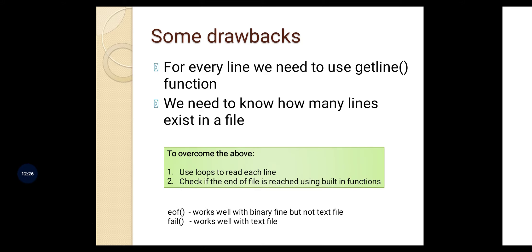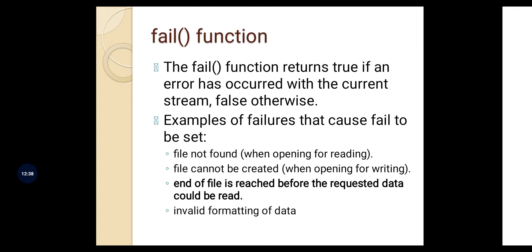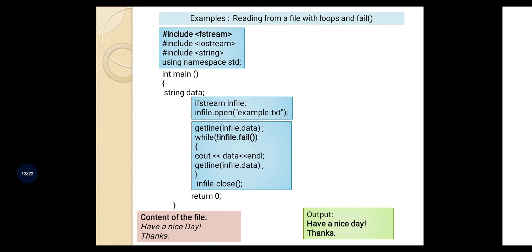The fail() function returns true if an error has occurred with the current stream, otherwise it returns false. Examples of errors include: the file not being found, the file not being able to be created due to permission issues, corrupt data formatting inside the file, or — most importantly for us — when the end of the file is reached before the requested data could be read. So we can continuously read and extract data from the stream until the fail() function returns true.